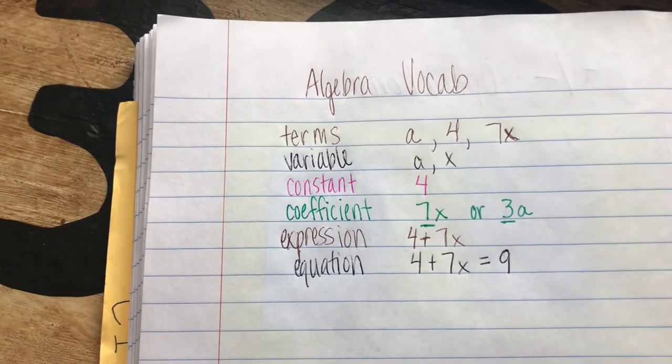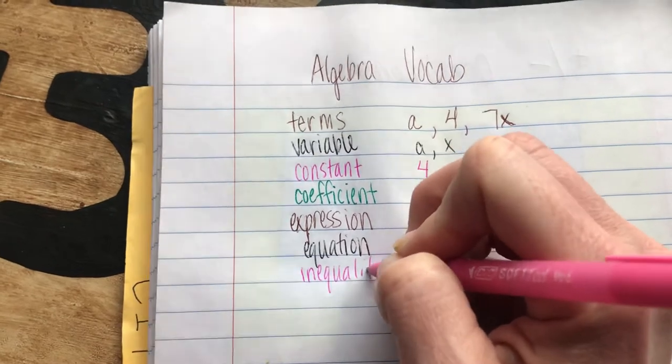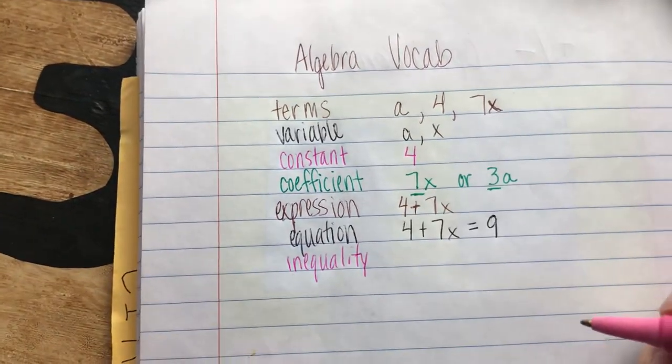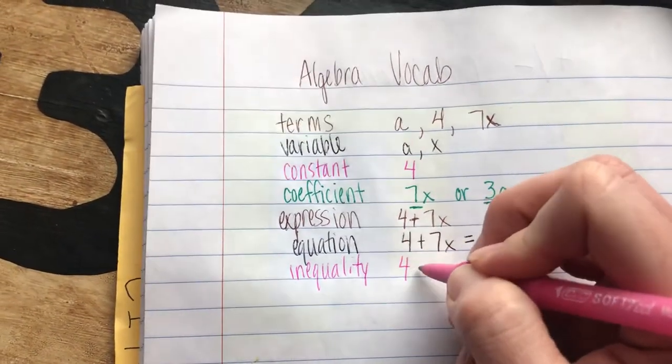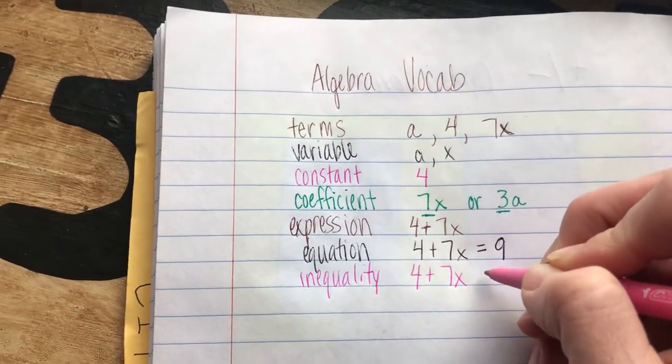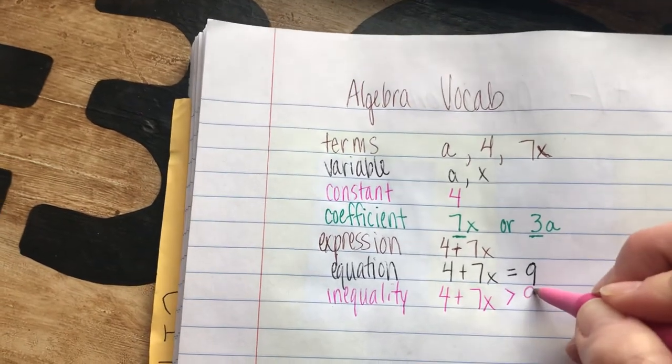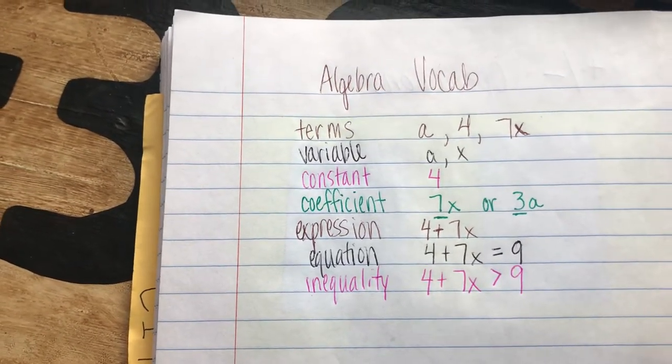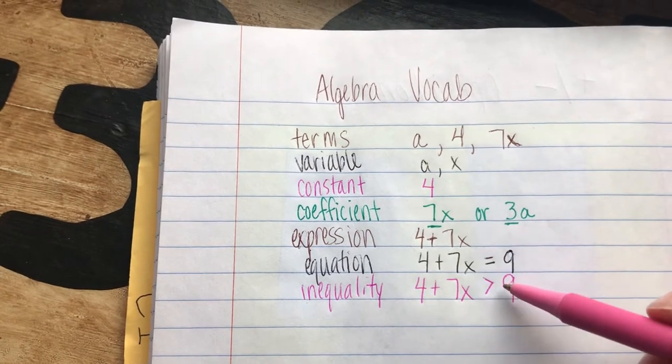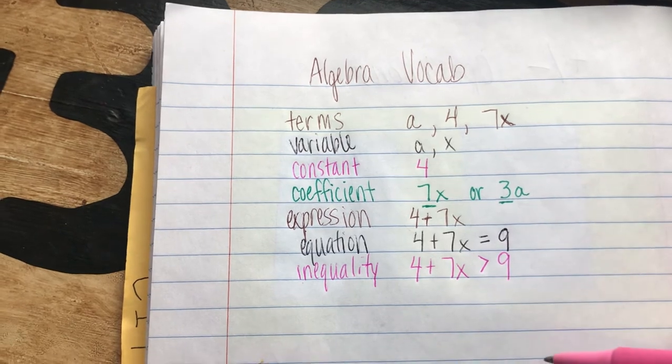Next is inequality. Like an equation, we have two sides to an inequality. But instead of an equal sign, we might have a greater than, less than, greater than or equal to, or less than or equal to symbol. So similar to an equation, but the two sides are not actually equal to each other.